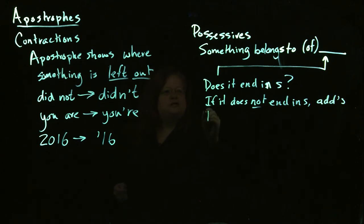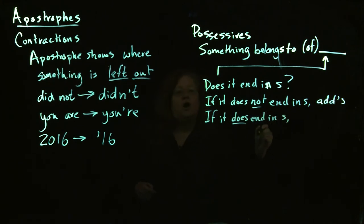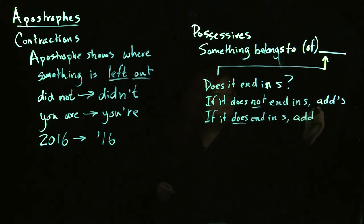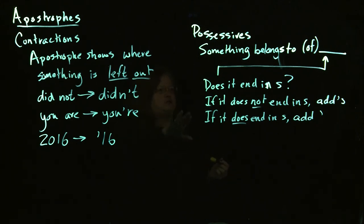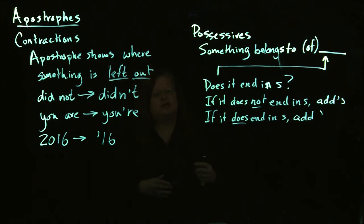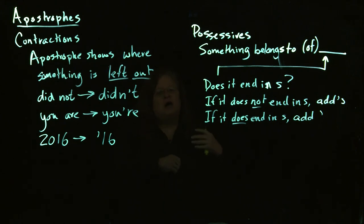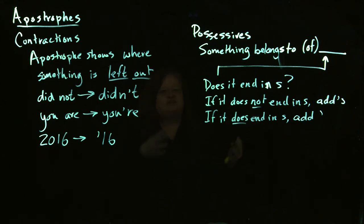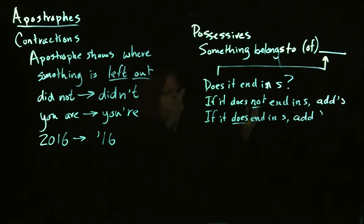If it does end in S, all you need to add is just the apostrophe. You don't have to worry about whether it's singular or plural. Some grammar books do make this more complicated — they'll say if it's a person's name that ends in S, you add apostrophe S if it changes the pronunciation, or unless it's somebody famous like Moses or Jesus. Some grammar books make this really complicated. But really, for practical purposes, you don't need to worry about all that. Just worry about whether it ends in S and formulate your possessive accordingly.